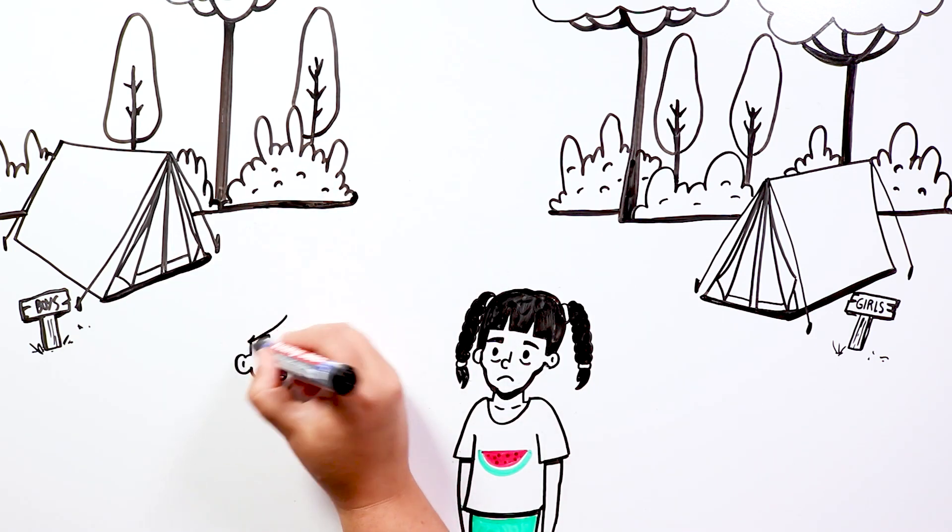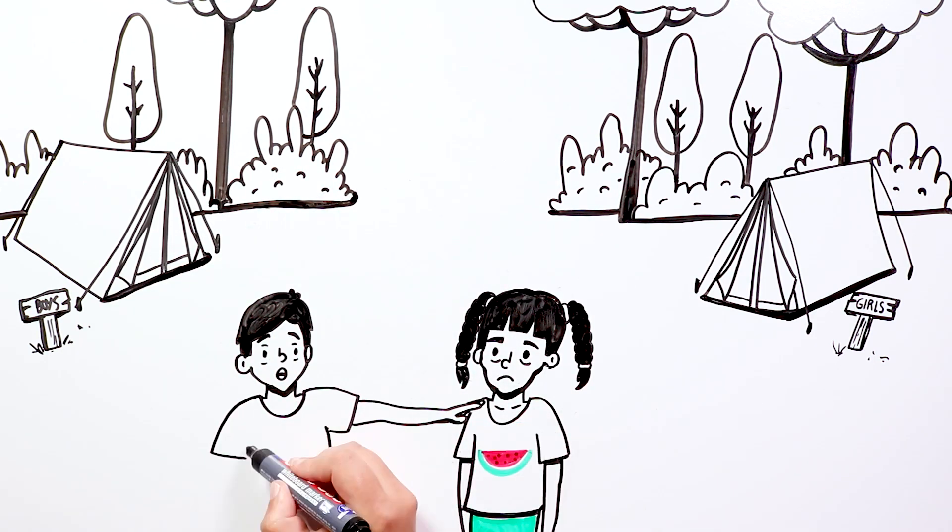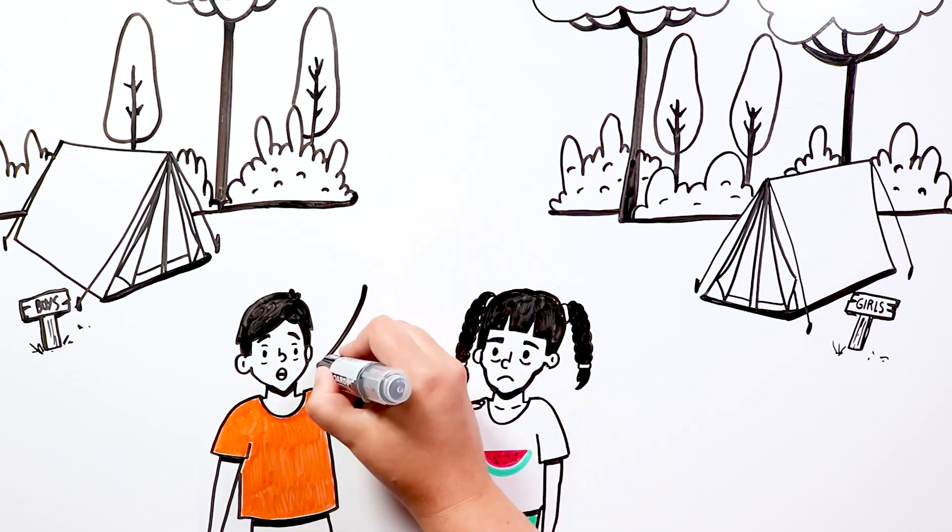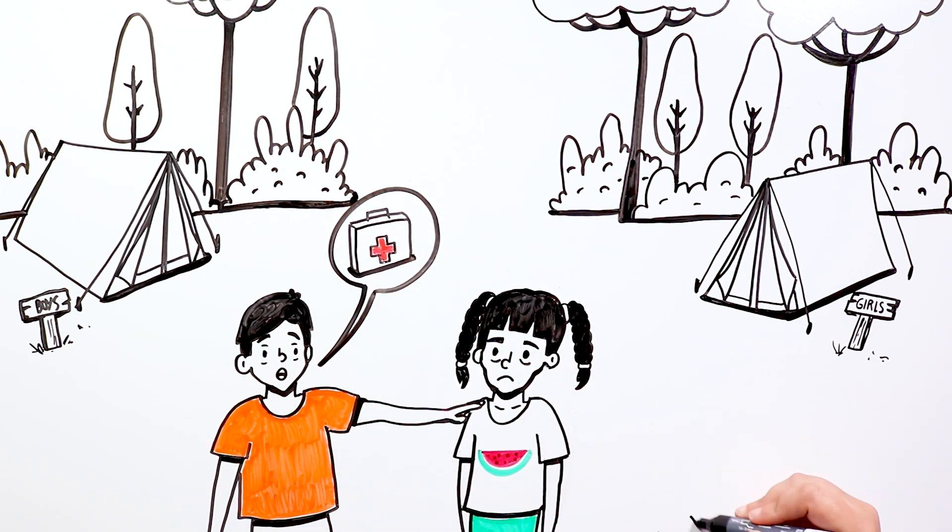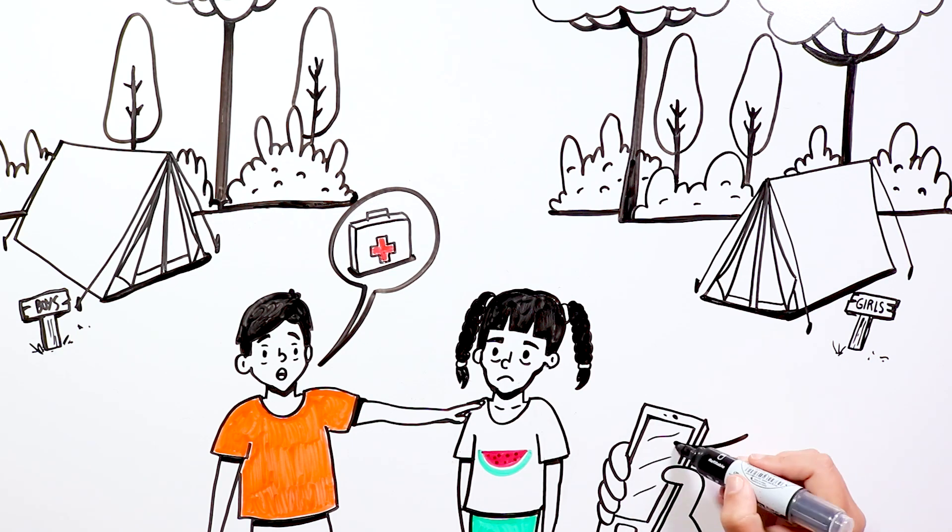That was when he realized that Kate was not pretending – something must have happened to her because the next day she asked the doctor to see her. The monitor informed her parents that their daughter would be seen by a medic, and he would tell her whether she should go home or not.